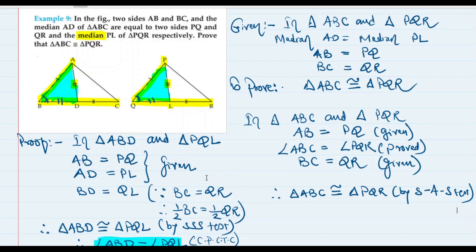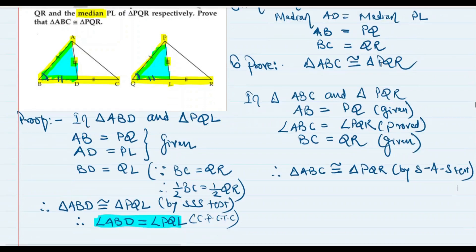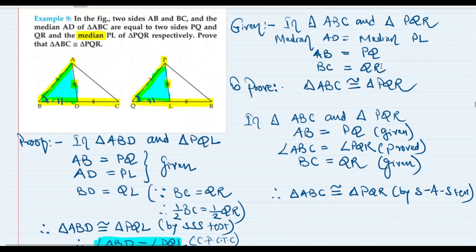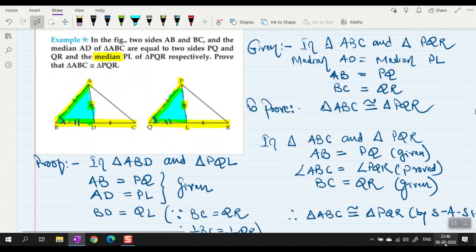This is a very interesting and important question. We couldn't prove the two triangles congruent directly, so we proved half of each triangle first, then used CPCTC to find the missing included angle, which was required for the SAS proof of the original triangles. I'll see you in the next video — take care, bye bye.